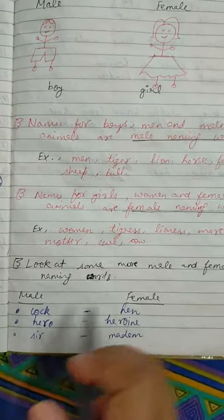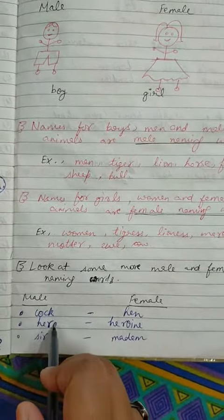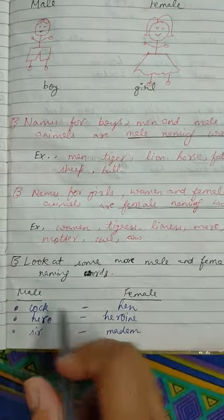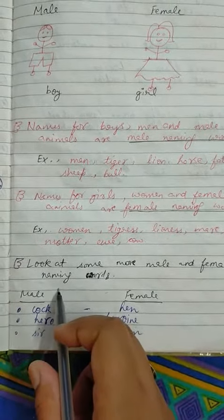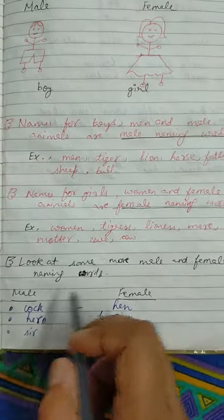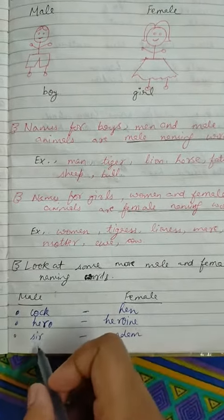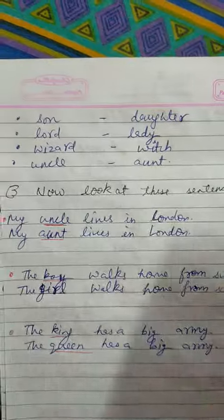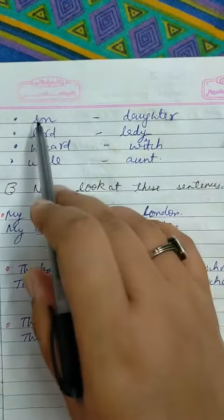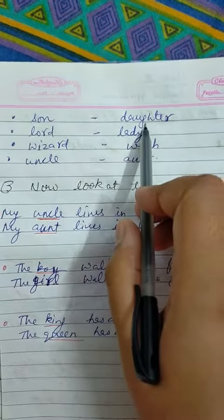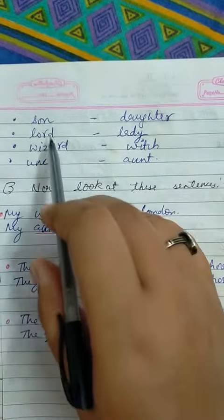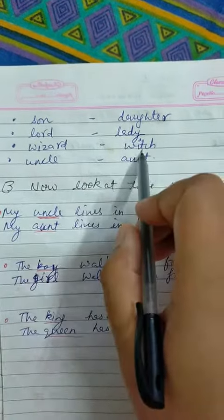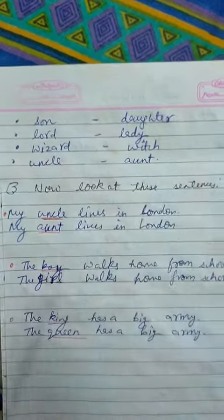Cock — hen, hero (male naming word) — heroine (female naming word). Male means 'he' and female means 'she.' Sir — madam, son — daughter. Son means beta. Lord — lady, wizard — witch, uncle — aunt.